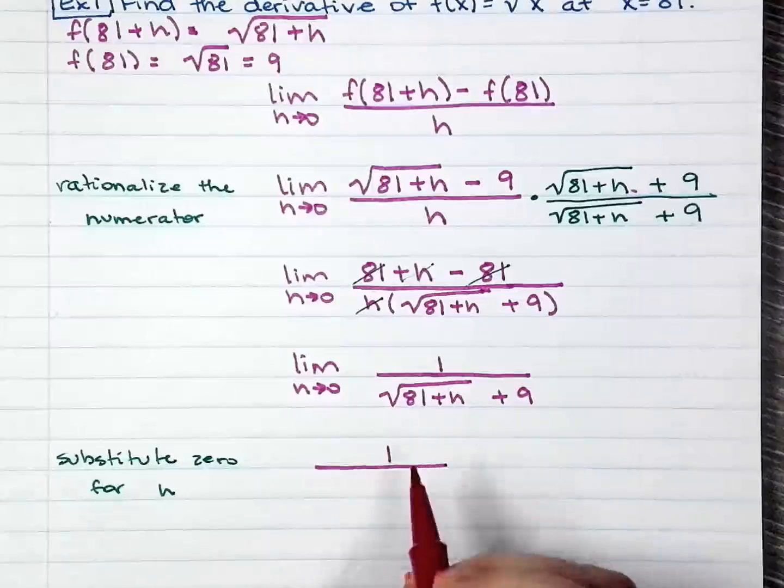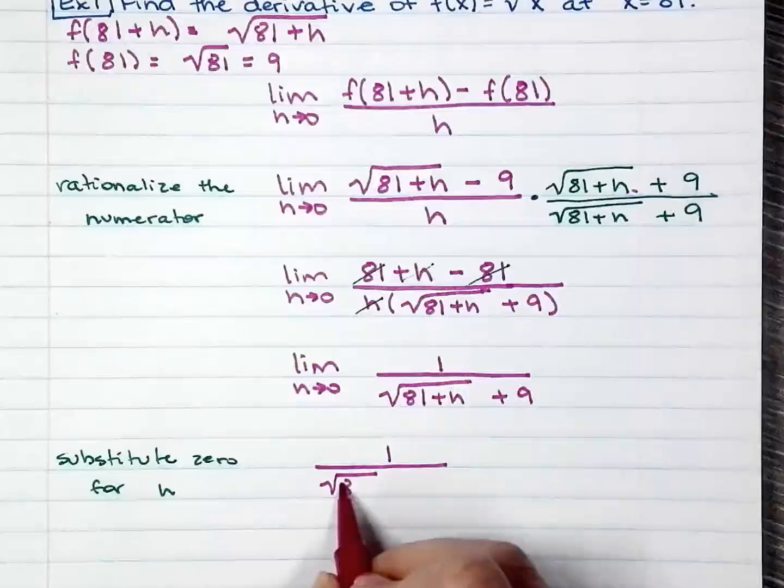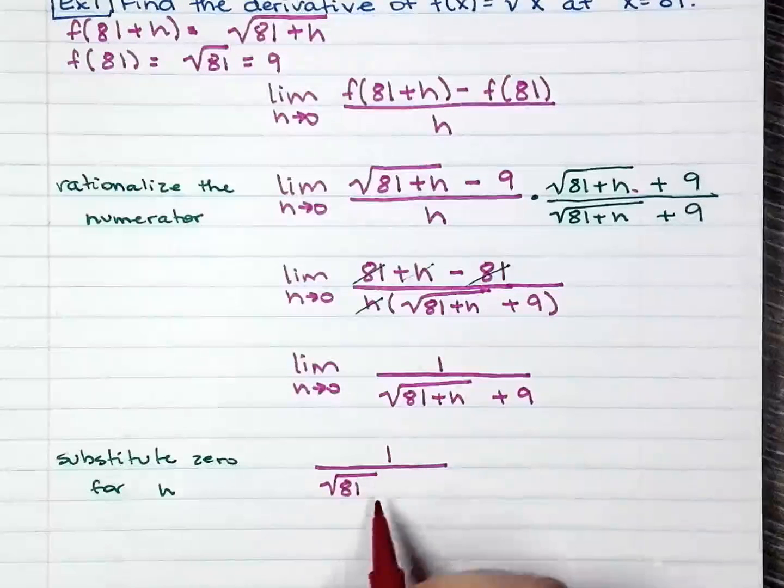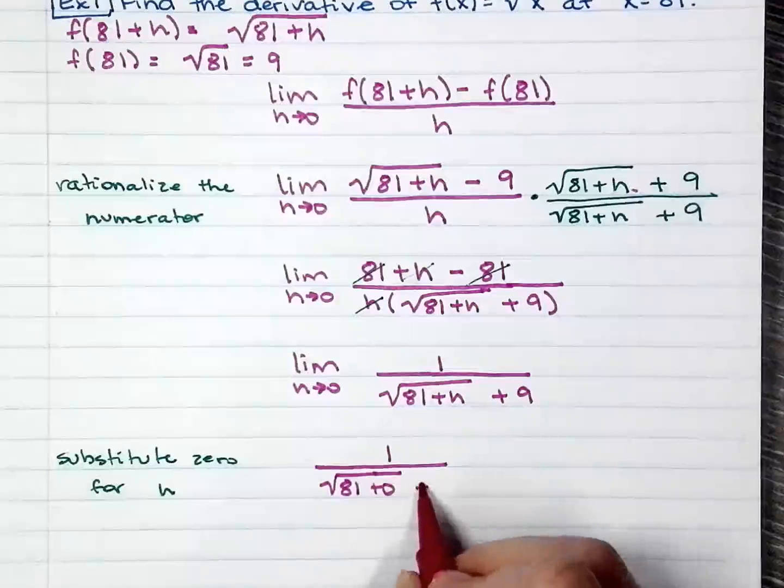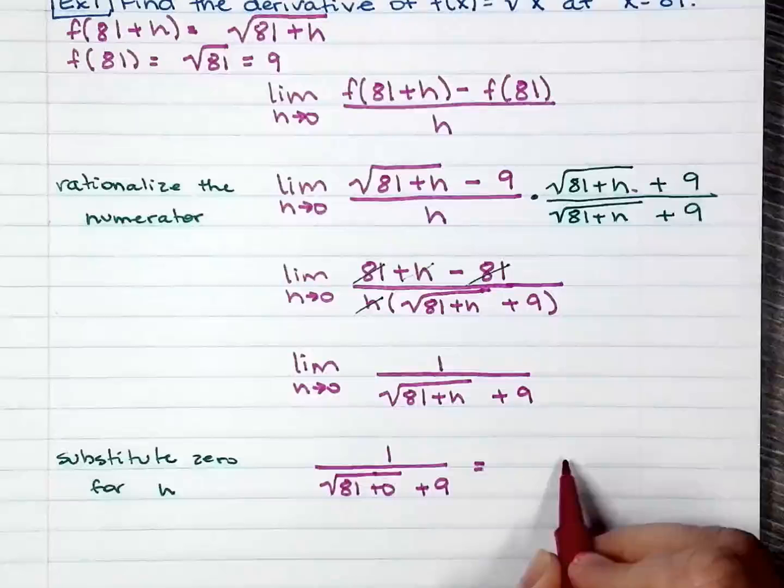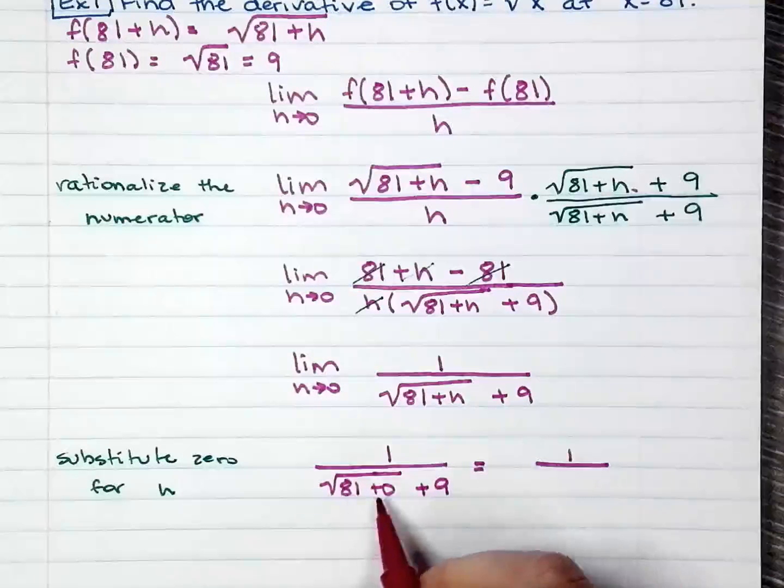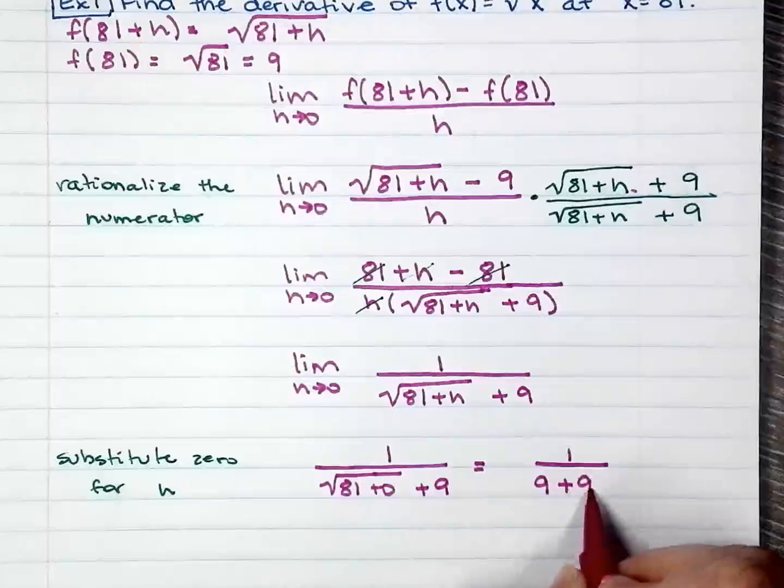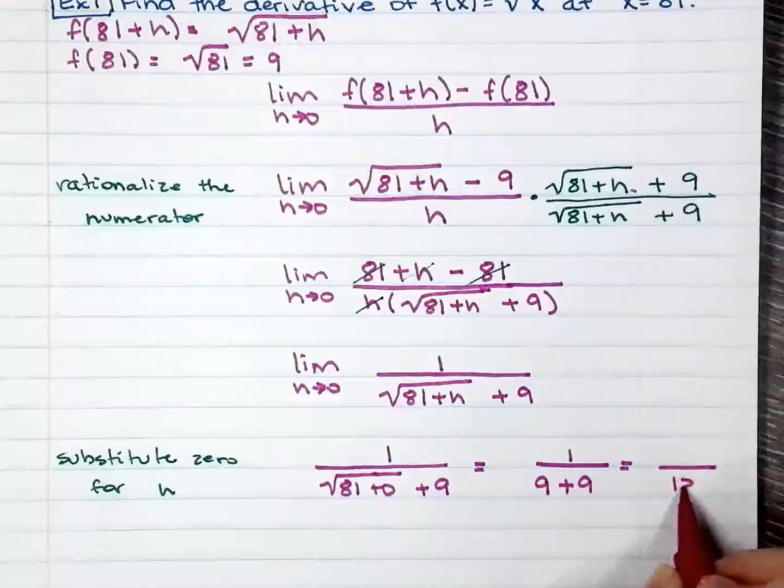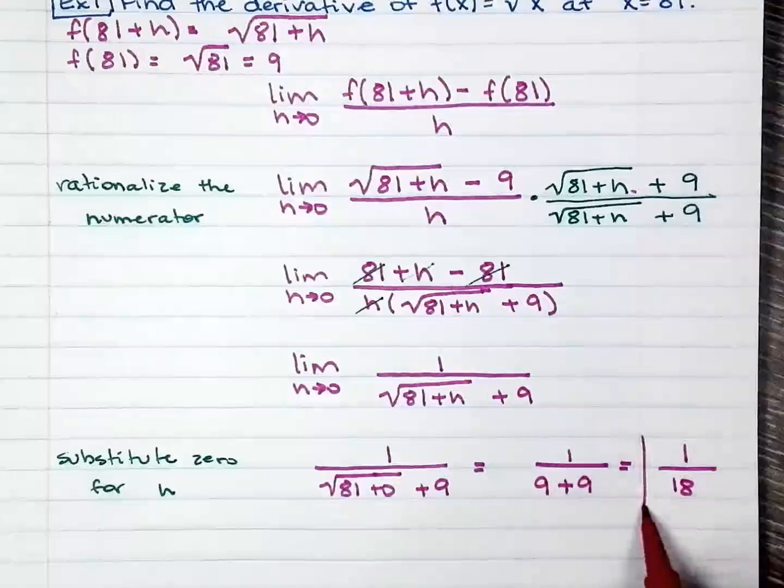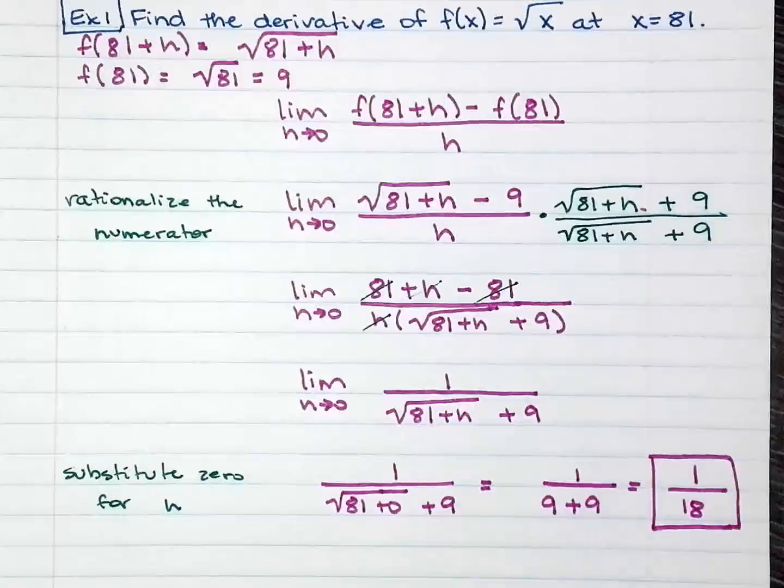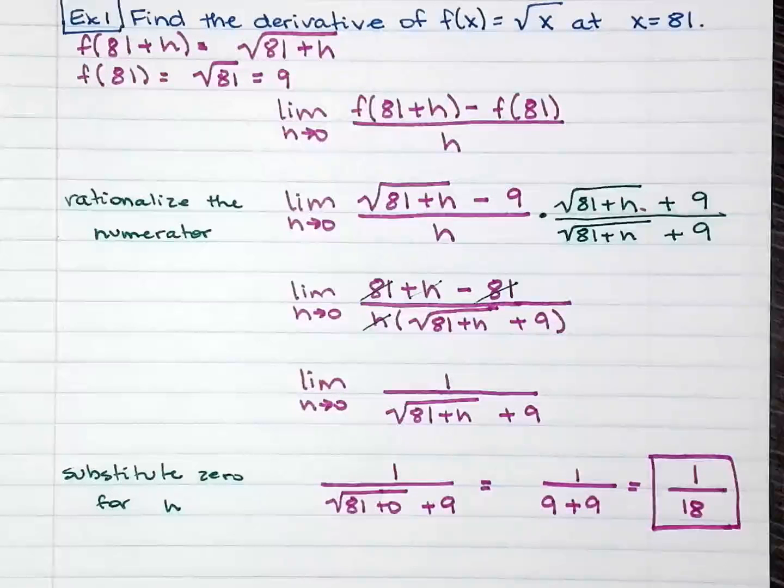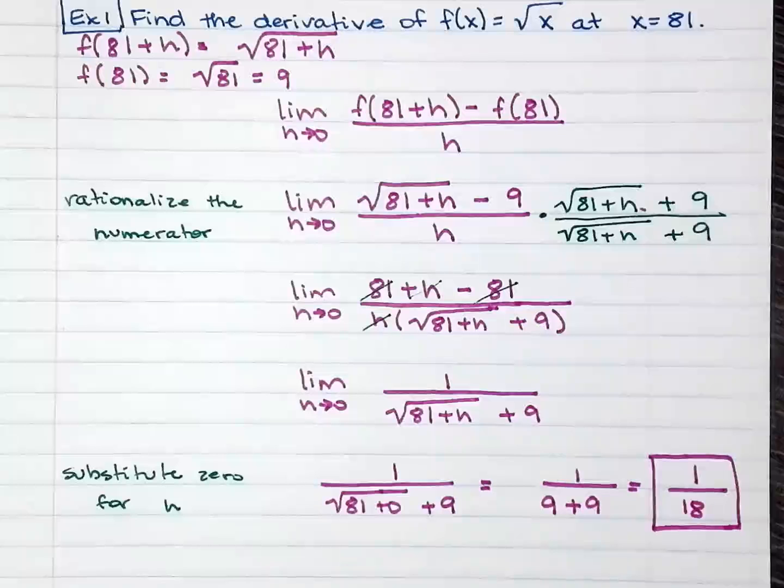So I have 1 over √(81+0). I'm just going to write it out, just because that's your note, so that way you know where it went. Plus 9. So √(81+0) is 9. 9+9 is 18. So that's not bad. We've done this before, but you just need to suffer through it. One more example.